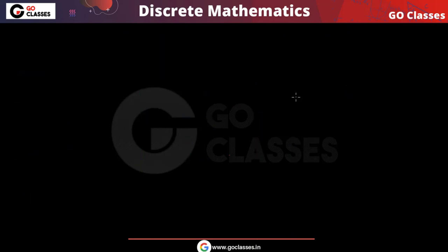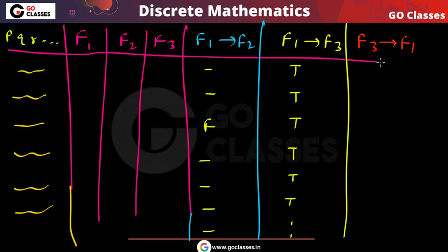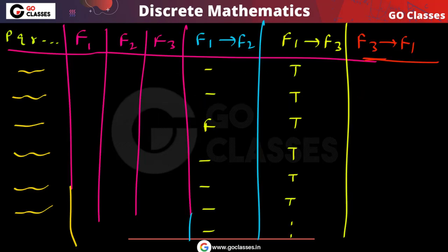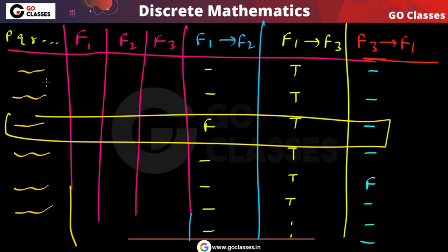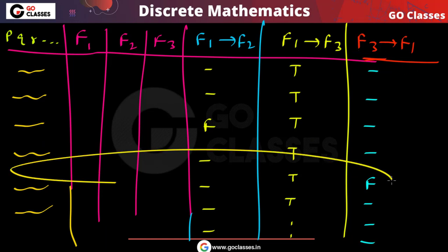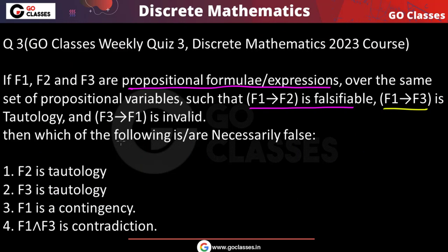F3 implies F1 is invalid. Invalid basically means falsifiable again. Invalid means not a tautology, so it is also falsifiable — at least one time false. We know F1 implies F2 is falsifiable, F1 implies F3 is tautology, and F3 implies F1 is falsifiable. Now the question asks: which of the following is necessarily false?